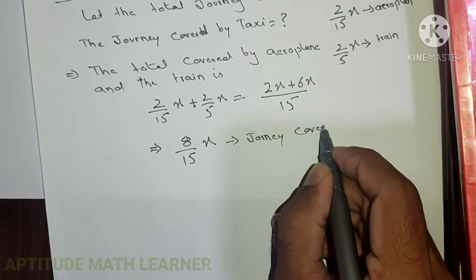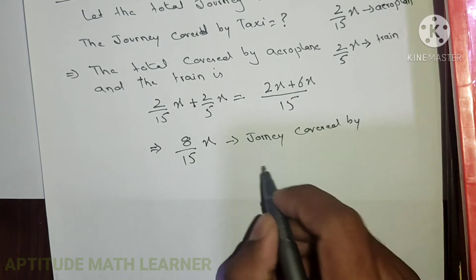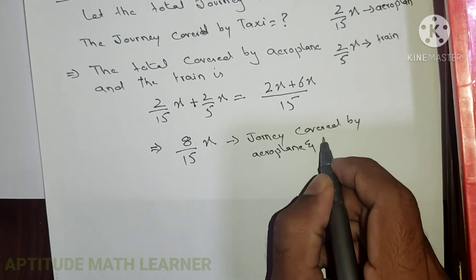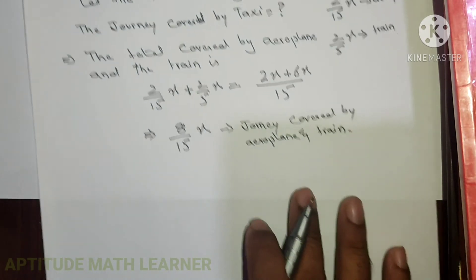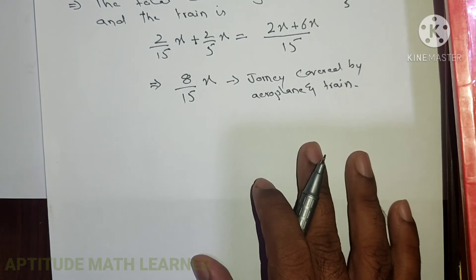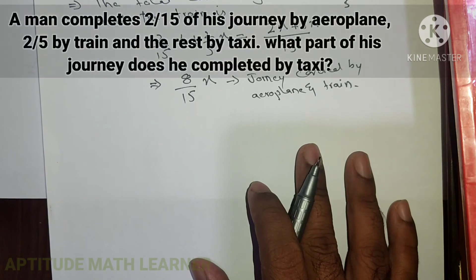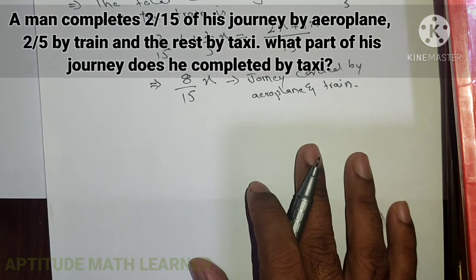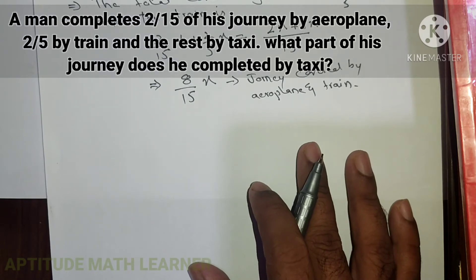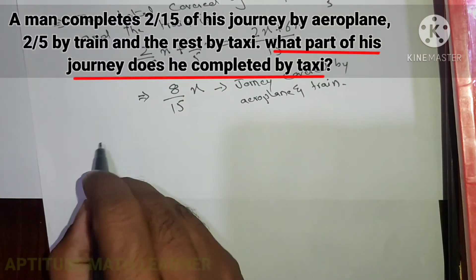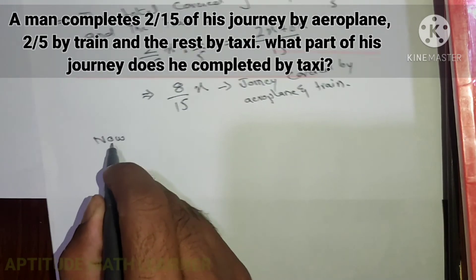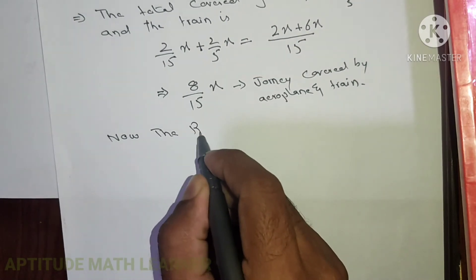This is the journey covered by aeroplane and train. Now we have to find the remaining journey, which is the part covered by taxi.